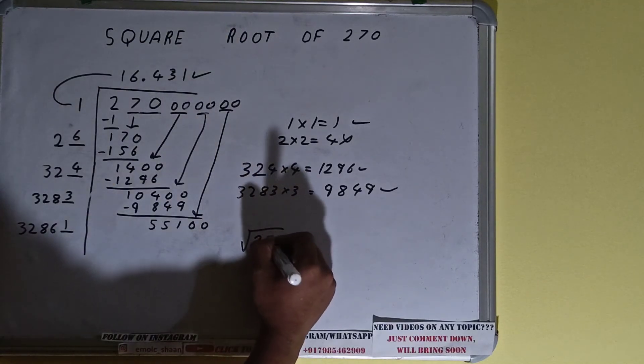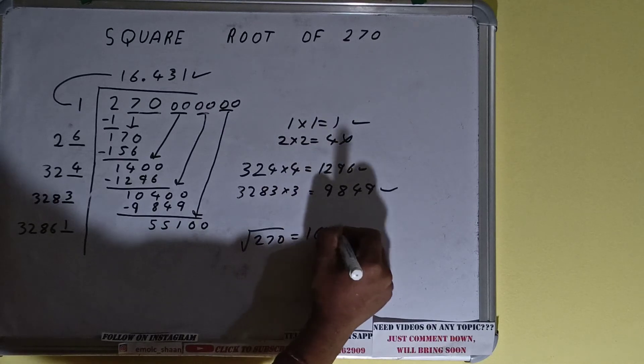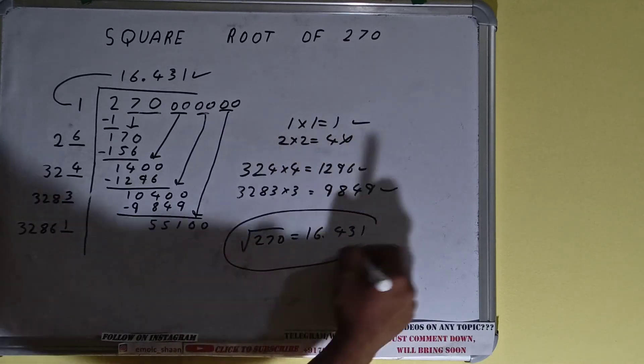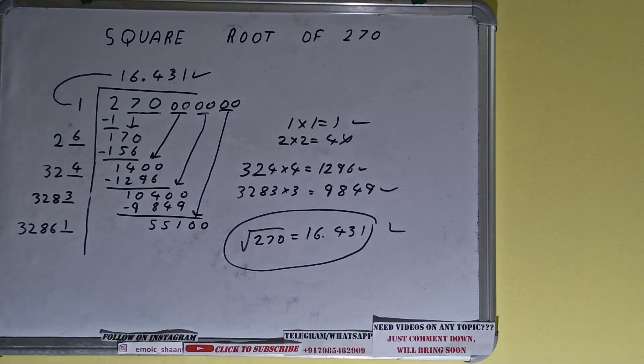So square root of 270 will be 16.431, and that will be the answer. So this is all. If you found the video helpful please hit the like button, do consider subscribing, and thanks for watching.